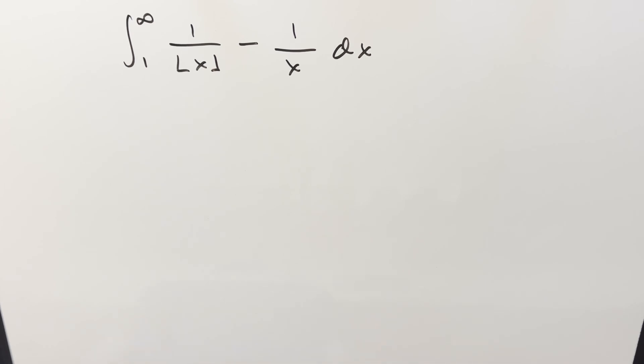Okay, we have here an interesting integral. We've got the integral from 1 to infinity, 1 over the floor function of x minus 1 over x dx. Some people might already recognize this problem and know the answer. It's going to rely on a formula towards the end. I don't want to show it right now, but if I show you the formula, I think it's going to give away the answer.